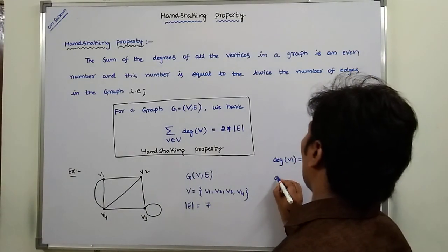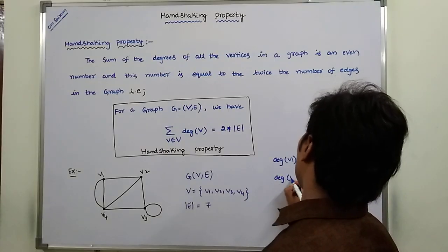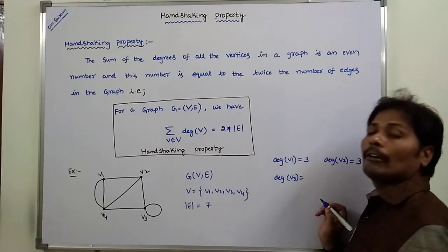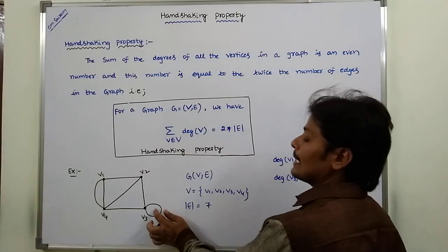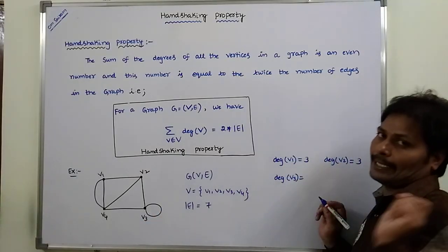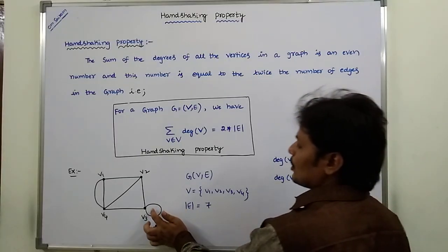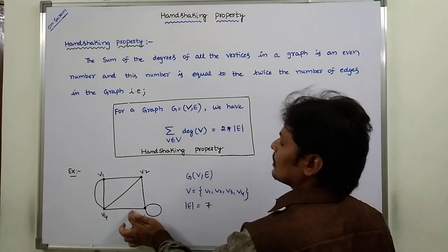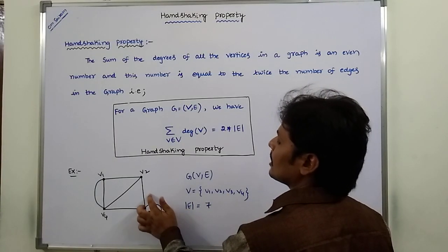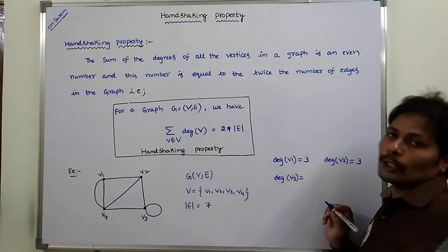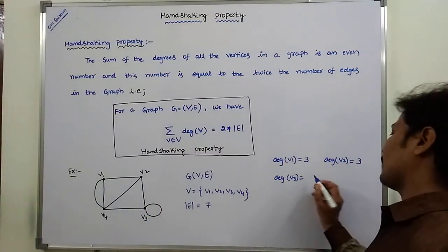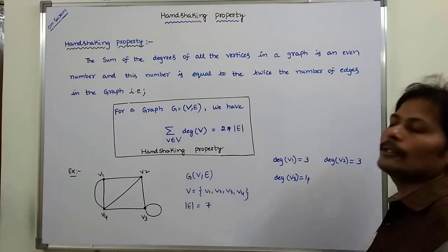Next, degree of V3. How many edges are incident on vertex V3? Here, there is a self-loop. A self-loop is counted twice while calculating the degree. So the loop counts as 2, plus 1, plus 1 — total 4. Therefore, degree of V3 is equal to 4.